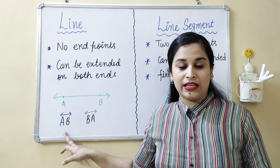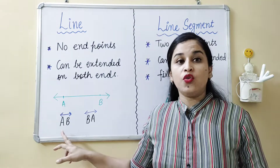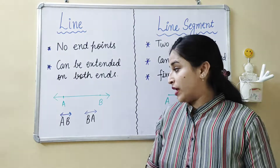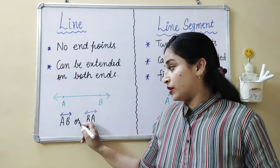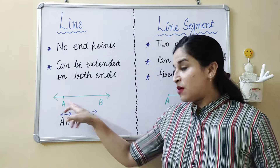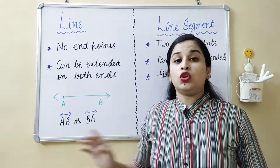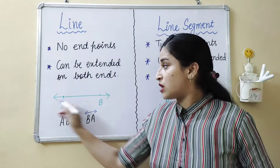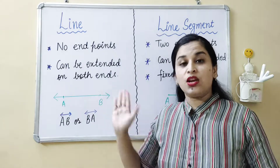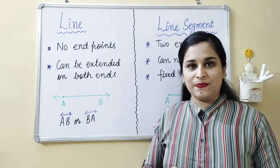My dear kids, how do we say the name of what we have written? We call it Line AB, or we can say Line BA. So the name of this line is Line AB or Line BA. These arrows are made on both sides to show that we can extend this line from both ends.